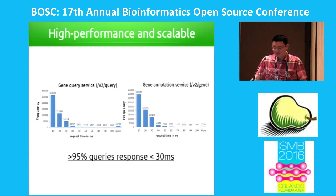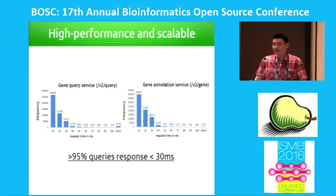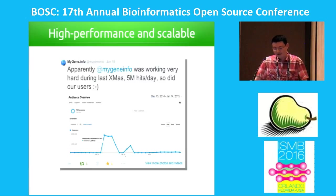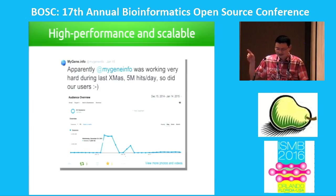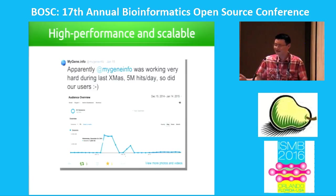As an API, people are pretty concerned about performance with a remote service. We make it really high performance and scalable. Most of our queries return within 30 milliseconds right now — those are real query stats. We saw one particular day, Christmas 2014, where one or two users hit us like crazy — five million hits in a single day. I was on vacation, and I'm glad our server was just fine. We were really happy to have those users doing a stress test for us.